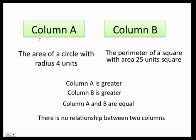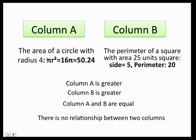Here I need to identify which column is greater. First I need to find the area of a circle that has radius four units. Remember the area of the circle is pi r squared, so that gives us approximately 50.24 units squared. For column B, the area is 25 — since this is a square, each side has to be five units. Therefore, since a square has equal sides, the perimeter is going to be 20 units.